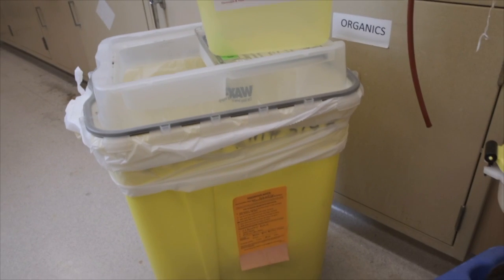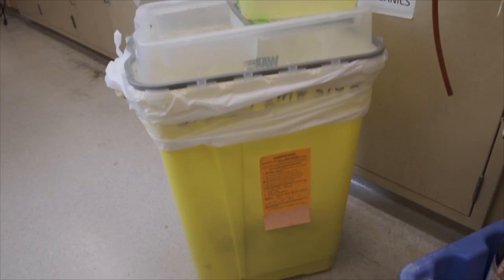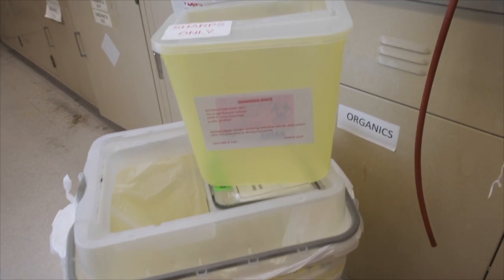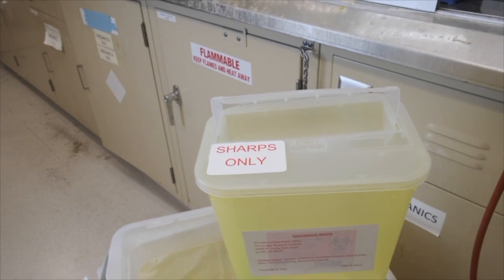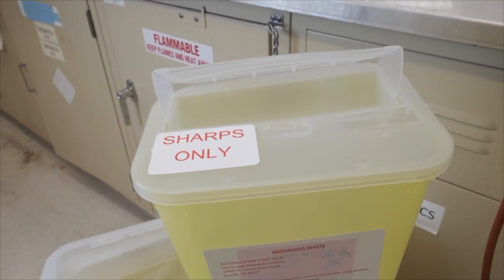This yellow debris bin is for chemical contaminated laboratory debris. If you have chemical contaminated sharps waste, such as razor blades, needles, or syringes, they would go in a yellow sharps container with a hazardous waste label.